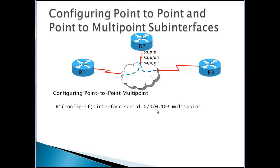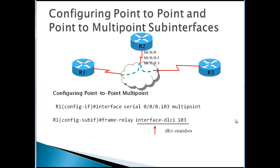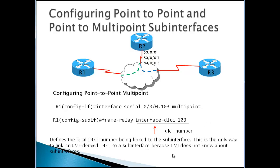For point-to-multipoint, you type 'interface serial 0/0/0.103 multipoint' — select this if all routers exist in the same subnet. Then you use the command 'frame-relay interface-dlci 103' to link the DLCI number to the sub-interface, because LMI does not know about sub-interfaces. This is the only way to link the LMI-derived DLCI to a sub-interface.